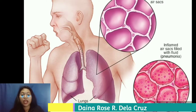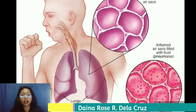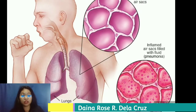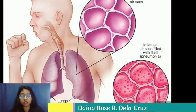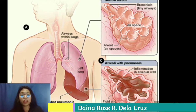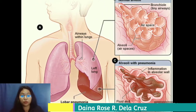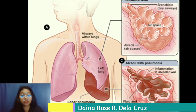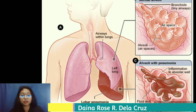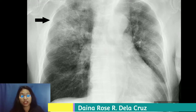Pneumonia is an infection that inflames the air sacs in one or both lungs. The air sacs may fill with fluid or purulent material, causing cough with phlegm or pus, fever, chills, and difficulty breathing. A variety of organisms including bacteria, viruses, and fungi can cause pneumonia, which can range in seriousness from mild to life-threatening.